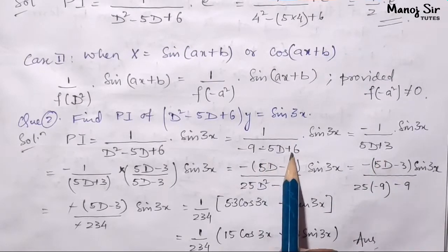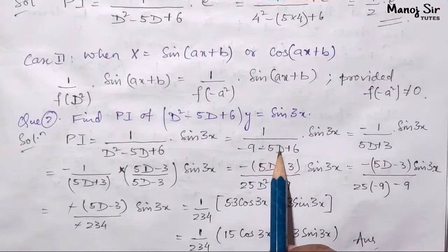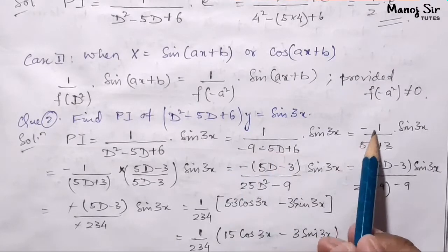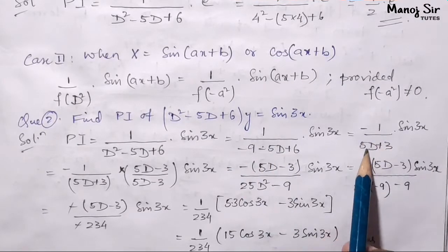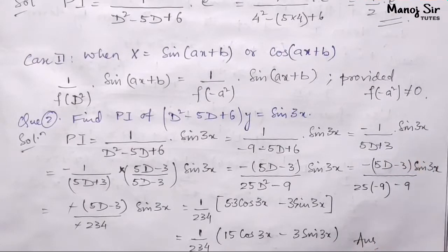On solving, minus 9 plus 6 gives minus 3, so we get minus 3 minus 5D. Taking minus as common, we get minus of 1 upon 5D plus 3, into sine 3x.